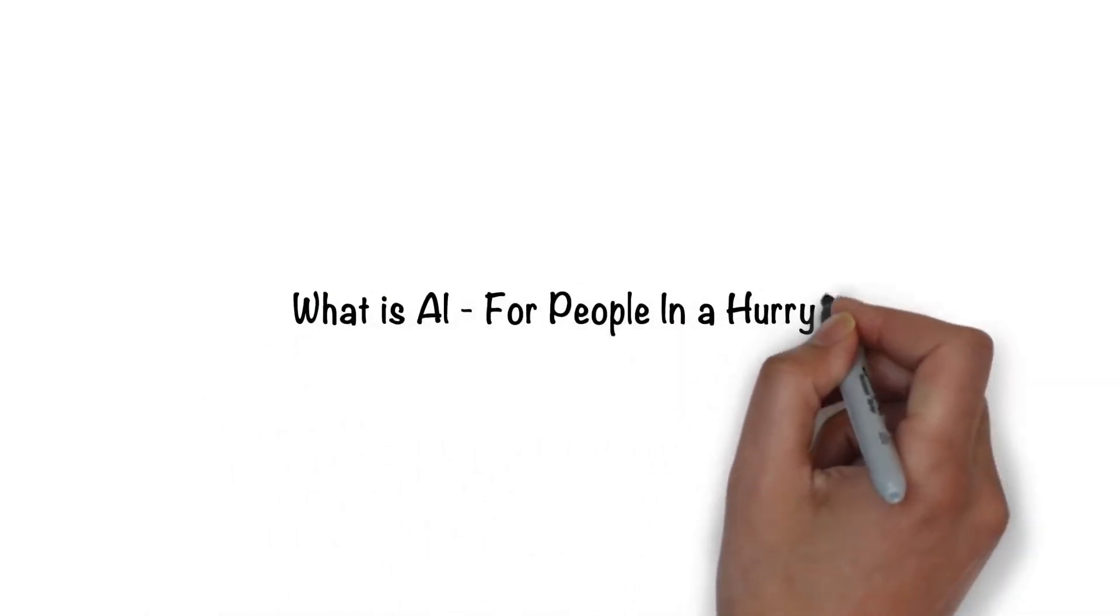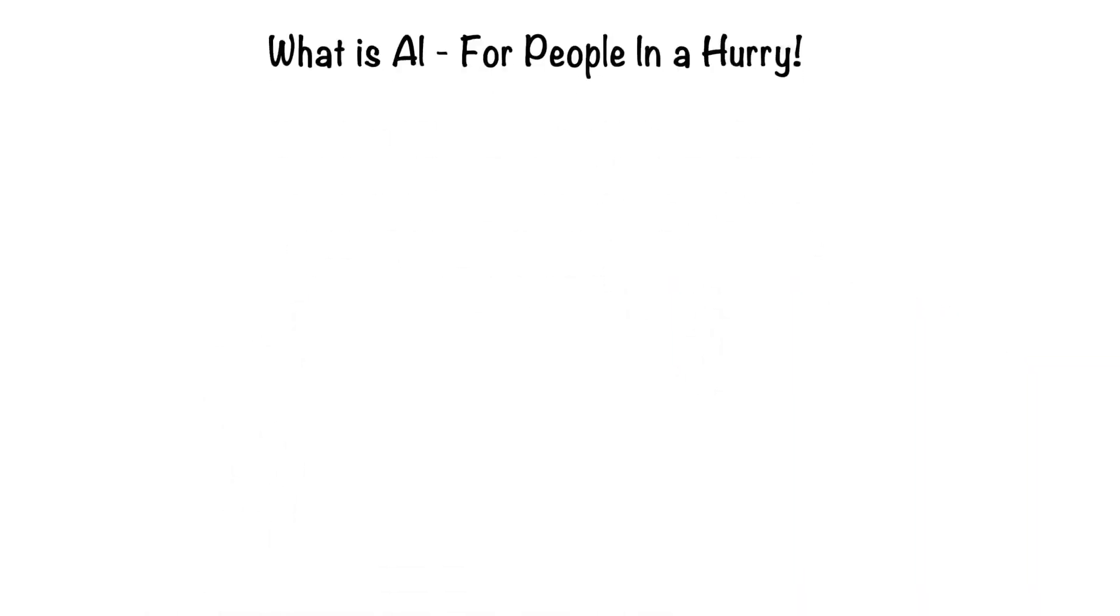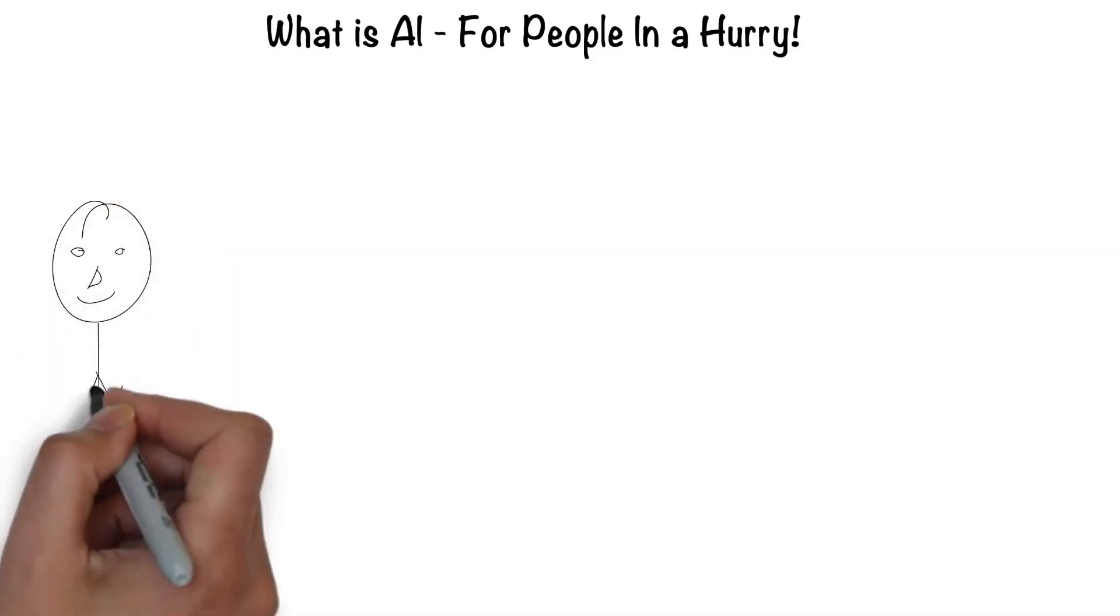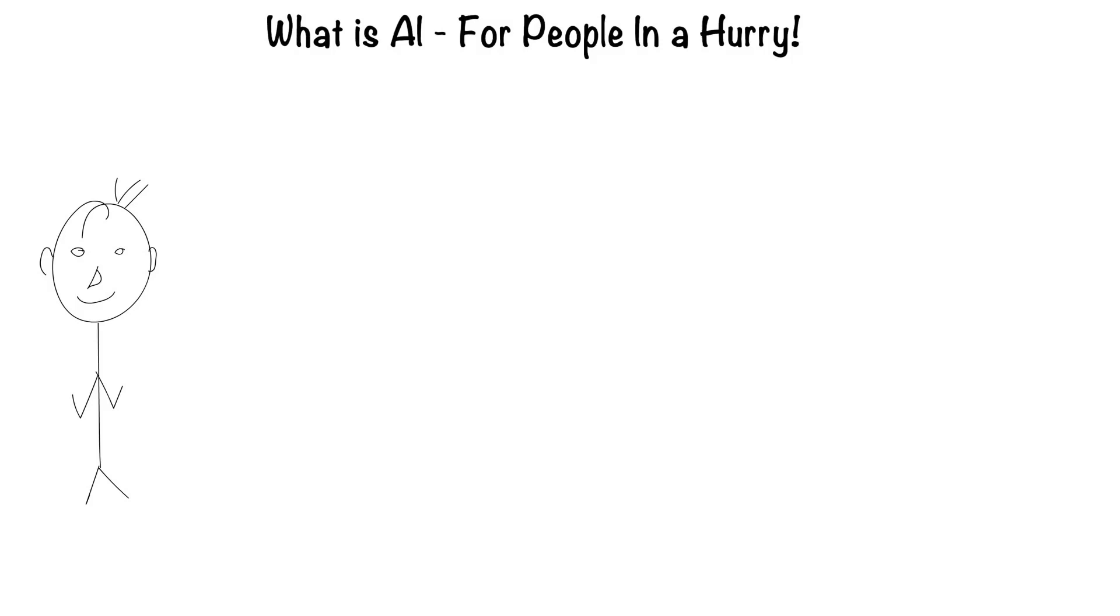Artificial intelligence for people in a hurry. The easiest way to think about artificial intelligence is in the context of a human. After all, humans are the most intelligent creatures we know of.